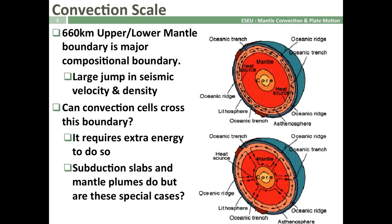There are other big questions relating to the scale of convection within the Earth's mantle. The 660 kilometre boundary is a major compositional boundary with a large jump in seismic velocity and density. Consequently, we have to ask: can convection cells actually cross this boundary? It requires extra energy to transform from spinels to perovskite-type structures and vice versa. Whilst we can probably say that subduction slabs and mantle plumes do cross this boundary — because there is seismic evidence — we're not convinced that convection cells can do the same. So the big question is: do we have thin layered convection within upper and lower mantles, or do we have whole mantle convection? And the jury's still out on this one.